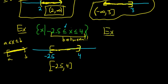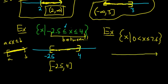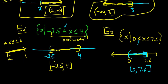Another example: the set of all x such that 0 is less than x, which is less than or equal to 7.6. Another between situation — x is between 0 and 7.6. Draw the number line, plot 0 and 7.6, and shade between them. Here we have a strict less than at 0, so we don't include it — parenthesis at 0. And less than or equal to at 7.6 gives us a bracket there. Reading left to right: parenthesis 0, comma, 7.6, bracket.